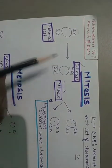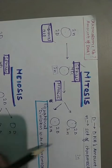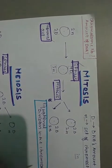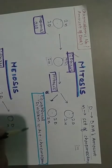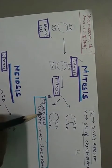Ab yeh cell mitosis karega to mitosis karega to yeh equational division hogi with respect to chromosome. Koi bhi division jab hum dekhte hai equational ya phir reductional, wo with respect to chromosome hoti hai.